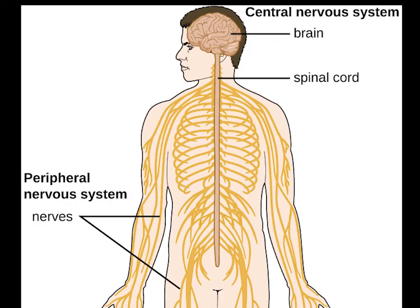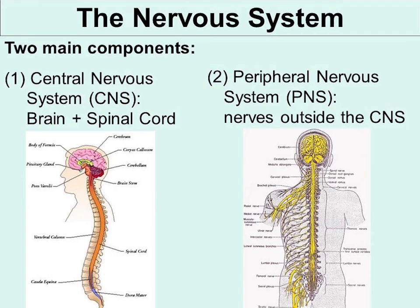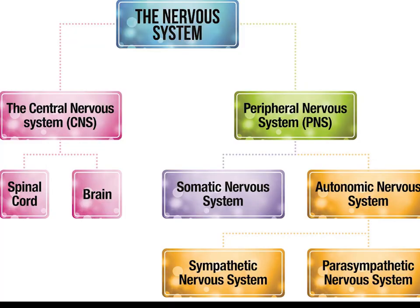At the most basic level, the function of the nervous system is to send signals from one cell to others, or from one part of the body to others. One way is by releasing chemicals called hormones into the internal circulation, so that they can diffuse to distant sites. In contrast to this broadcast mode of signaling, the nervous system provides point-to-point signals. Neurons project their axons to specific target areas and make synaptic connections with specific target cells. Thus, neural signaling is capable of a much higher level of specificity than hormonal signaling, and is also much faster. The fastest nerve signals travel at speeds that exceed 100 meters per second.